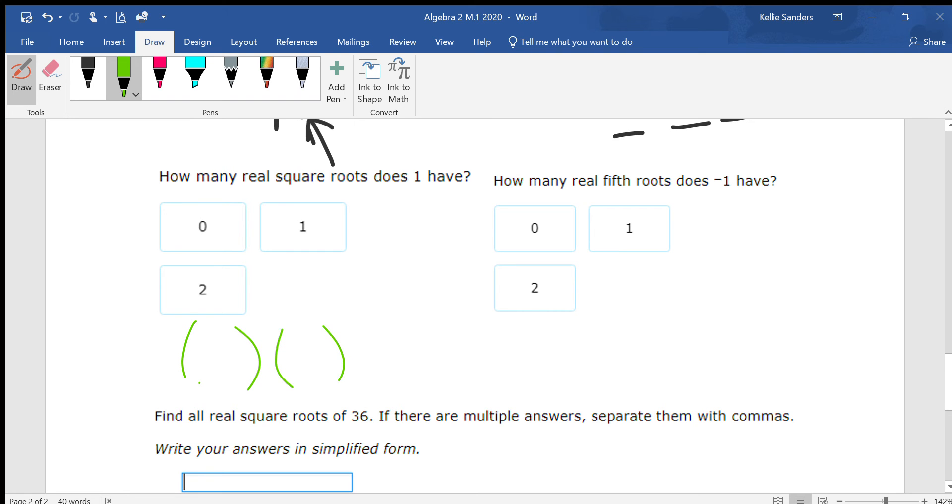Square root of 1. Since it's square and this is positive, then I'm going to get two answers. It's either going to be 1 or negative 1. 1 times 1 is 1, negative 1 times negative 1 is 1. The fifth root of negative 1. Because this is odd, I don't care that this is negative. We're going to get one answer.